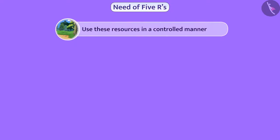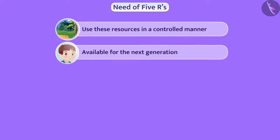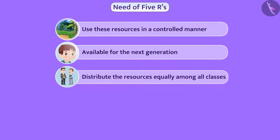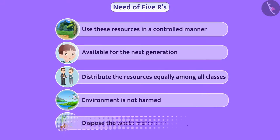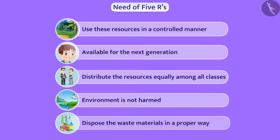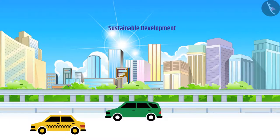So we must use these resources in a controlled manner so that they are available for the next generation. We should distribute the resources equally among all classes, ensure that the environment is not harmed during use of resources, and dispose of waste materials in a proper way. The concept of sustainable development encourages the development and fulfillment of the present needs of human beings, while also ensuring that resources are available for future generations.